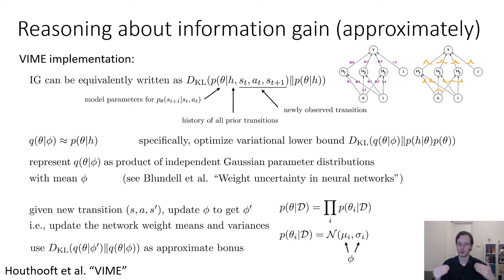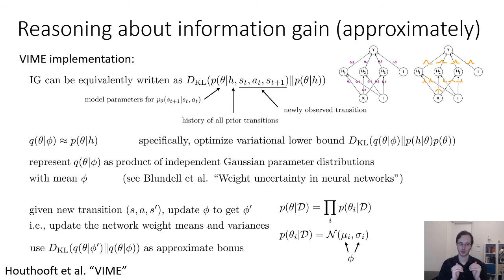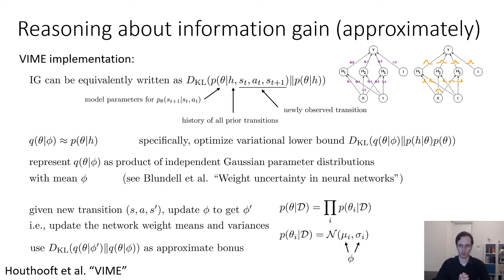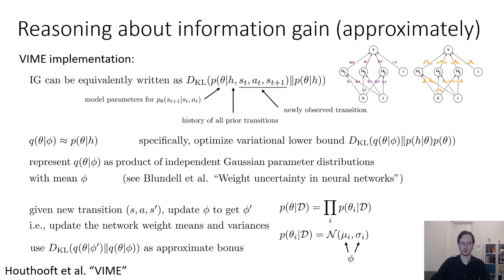When we observe a new transition, we update the means and variances of our Bayesian neural network, and then calculate the KL divergence between q(θ | φ') and q(θ | φ) as our approximate bonus. KL divergences between Gaussian distributions have a closed-form equation, so we just look up the equation and plug it in. Intuitively, this equation will look very similar to the amount of change in the means. What we end up with is an algorithm that updates our Bayesian neural network and uses the amount by which the parameters changed as an estimate of information gain — assigned as a bonus to that transition.